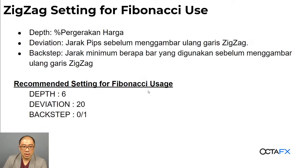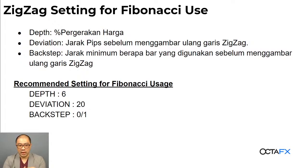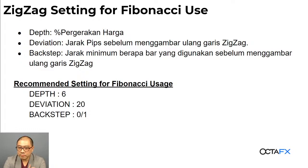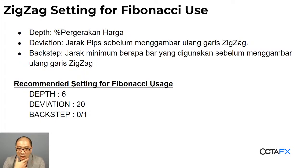Kita tambah sedikit Fibonacci expansion, kemudian kita akan touch on Fibonacci fan — apa yang membuat fan itu berbeda dari Gann fan atau Gann grid. Dan as usual dengan Fibonacci, kita akan melakukan example di real market dan kita lihat gimana aplikasinya. Oke, setting dulu zigzag kalian ya, kalian buka dulu zigzag-nya, saya jelasin dulu ini apa.